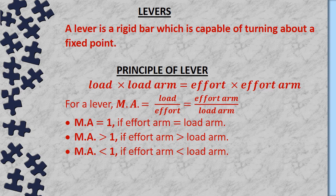Some examples of machines: first, levers. A lever is a rigid bar capable of turning about a fixed point. It works on the principle: Load × Load Arm = Effort × Effort Arm. For a lever, Mechanical Advantage = Load / Effort = Effort Arm / Load Arm. MA equals 1 if effort arm equals load arm; MA is greater than 1 if effort arm is greater than load arm; MA is less than 1 if effort arm is less than load arm.